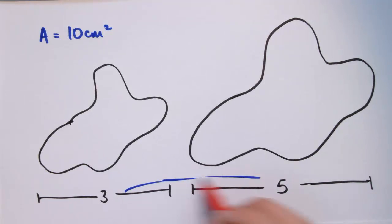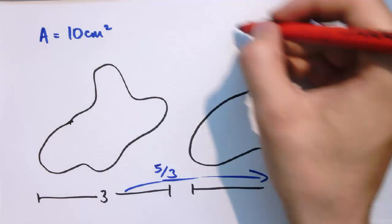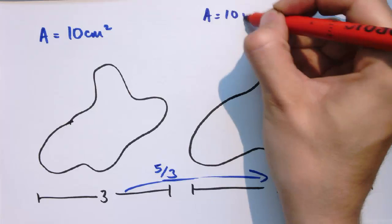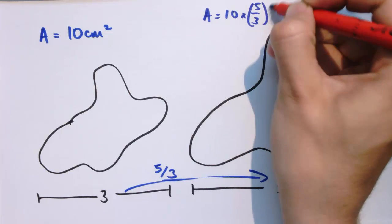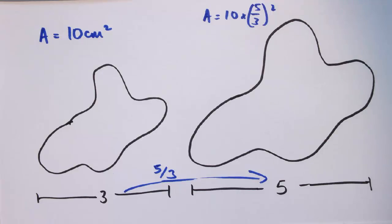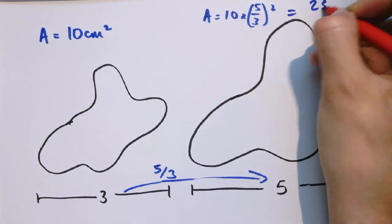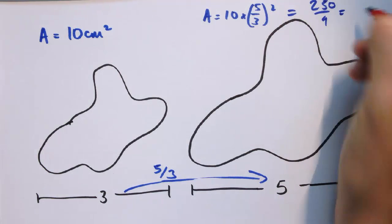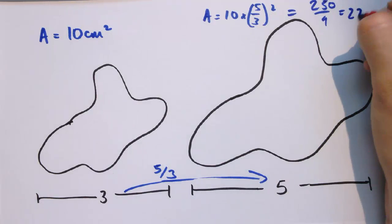So the length scale factor is 5 thirds. So the area of the larger shape would be 10 times the length scale factor squared, which would give us 250 over 9, or approximately 27.8 cm squared.